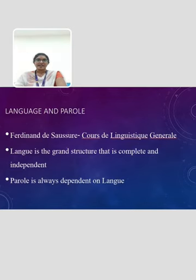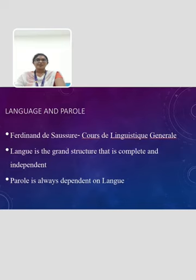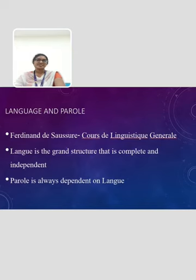The first topic is Language and Parole. The discussion of Language and Parole was first suggested by Ferdinand de Saussure and popularized in his work named Cours de Linguistique Générale. According to Ferdinand de Saussure, langue is the grand structure that is complete and independent. Parole is always dependent on langue.